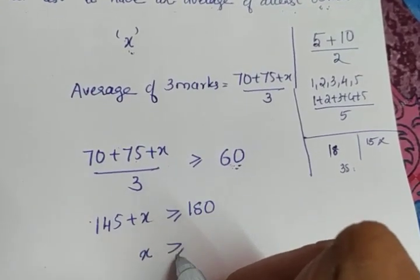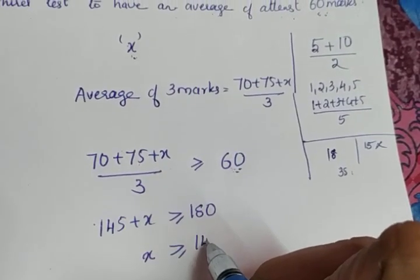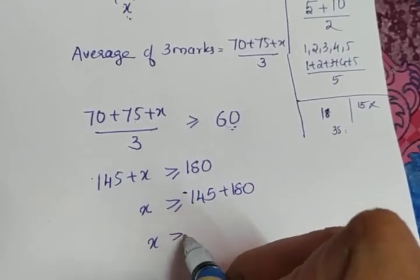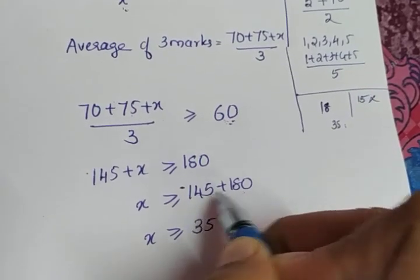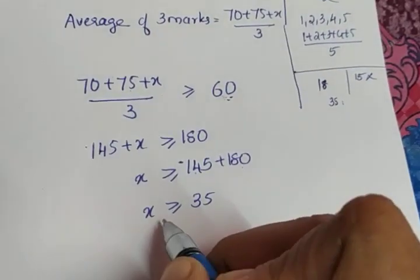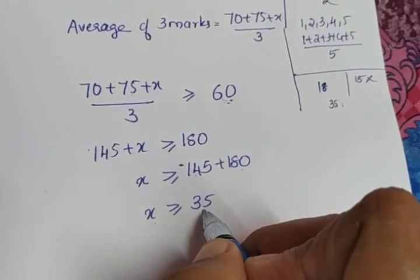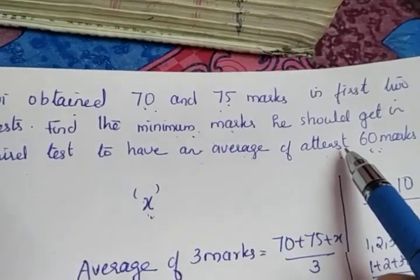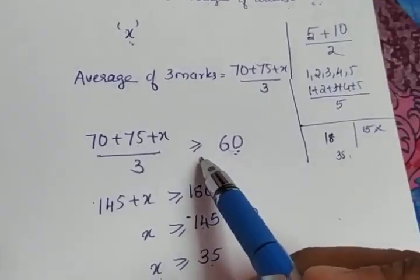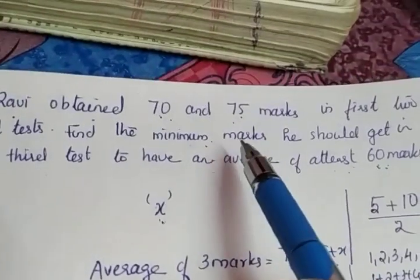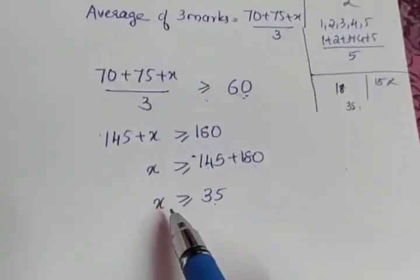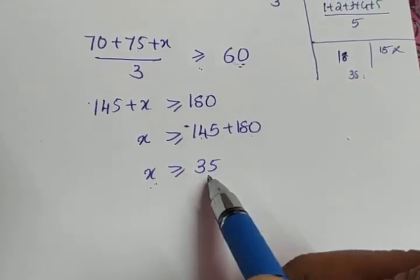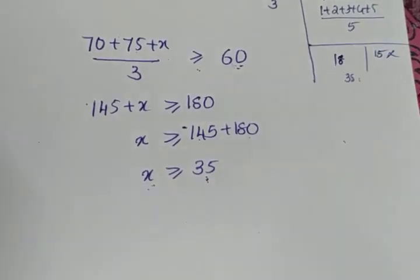From 145 + x ≥ 180, we get x ≥ 180 − 145, which gives us x ≥ 35. So if x takes a value greater than or equal to 35, the average will be more than or equal to 60. Coming back to the question: we have to find the minimum mark so that the average is at least 60, and the condition gives us x ≥ 35.